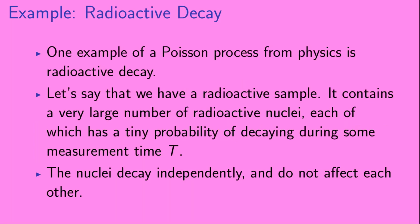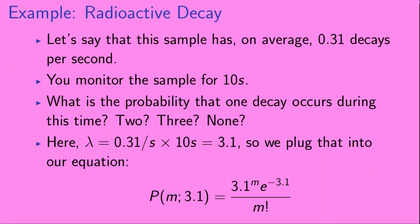One example of a Poisson process from physics is radioactive decay. Let's say that we have a radioactive sample containing a very large number of radioactive nuclei, each of which has a tiny probability of decaying during some measurement time t. The nuclei decay independently and do not affect each other. Let's say that this sample has, on average, 0.31 decays per second, and you monitor the sample for 10 seconds. What is the probability that one decay occurs during this time? Two? Three? None at all?